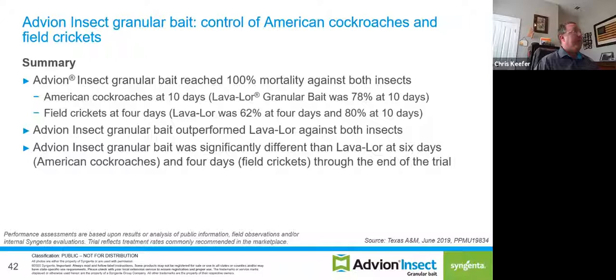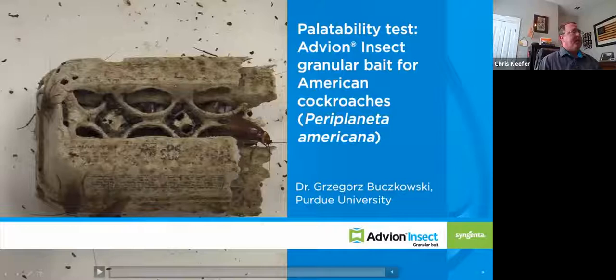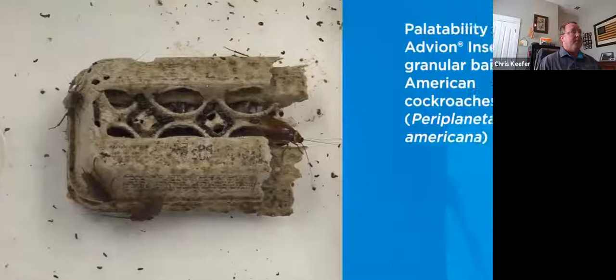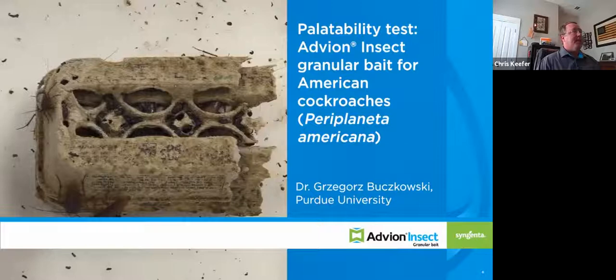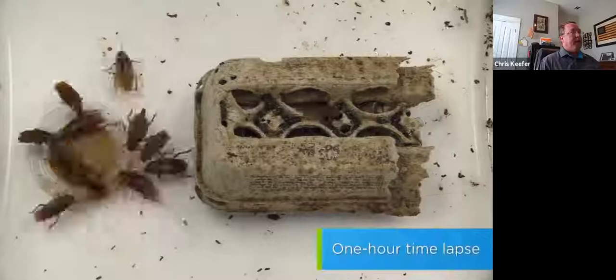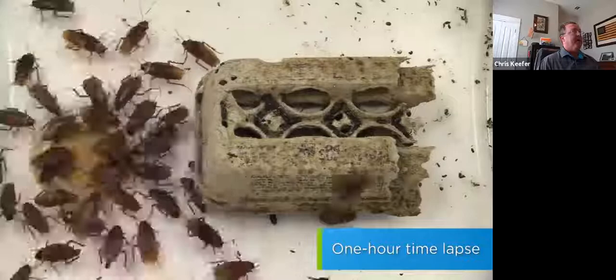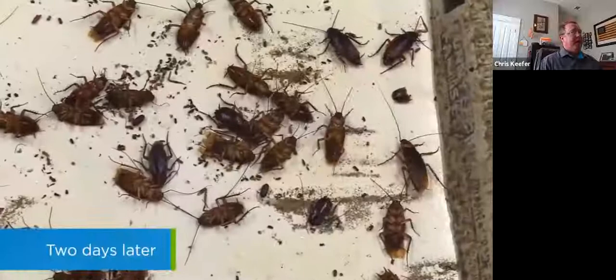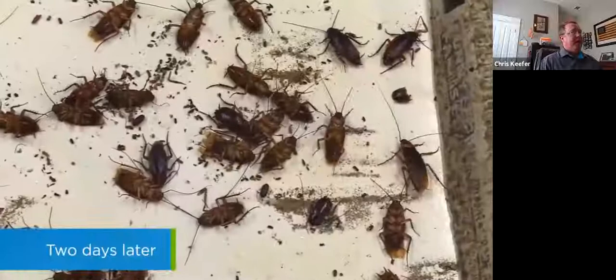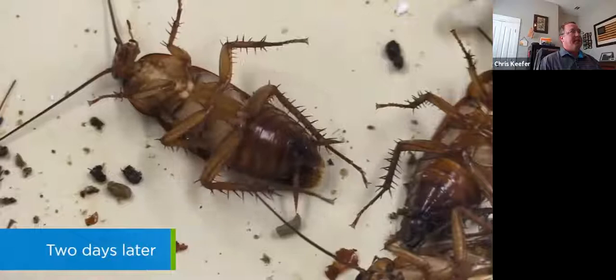There's a video done by Dr. Bukowski at Purdue showing American cockroaches in their natural arena. Advion insect granular bait is placed inside, and the cockroaches just start feasting on it. This is time-lapsed — at about one hour you can see they really never stop feeding on it, they keep going back to it. Two days later, there is massive, significant mortality. You see the twitching of the cockroach, which is normal activity when they've fed on a toxicant. Really good data there for multiple pests — cockroaches and crickets — and the videos are very telling in that aspect as well.